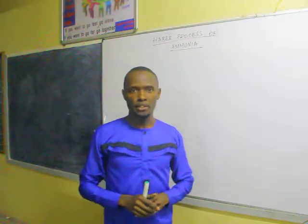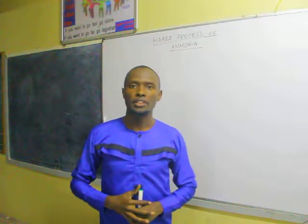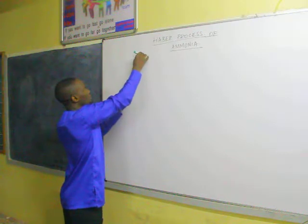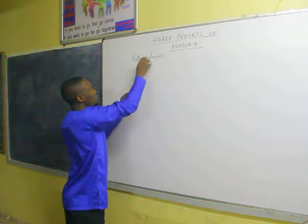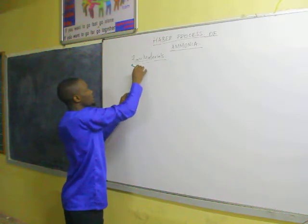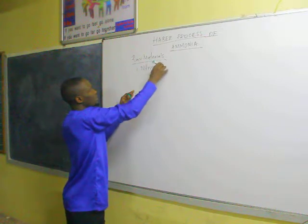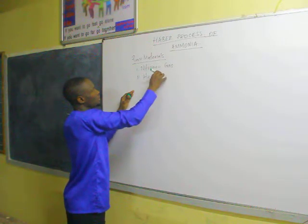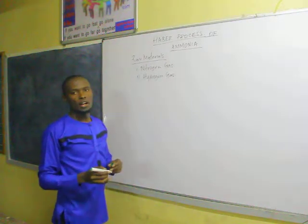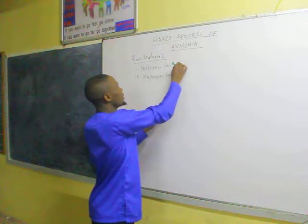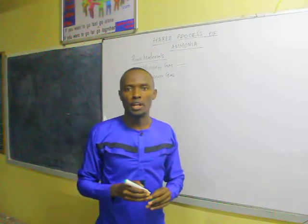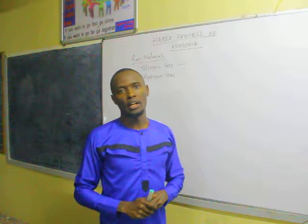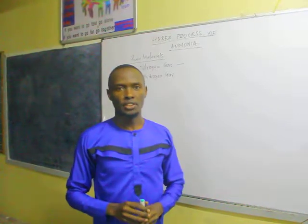For us to make ammonia we need raw materials — two gases: nitrogen gas and hydrogen gas. The first one is nitrogen gas and the second one is hydrogen gas. How do we obtain these gases? Nitrogen is obtained from fractional distillation of liquid air, while hydrogen can be obtained from cracking of long-chain alkanes.